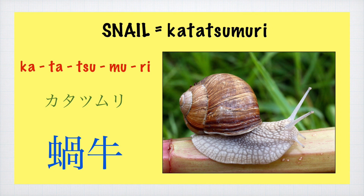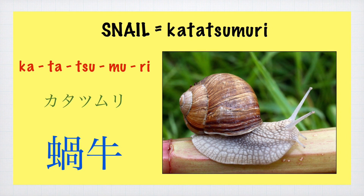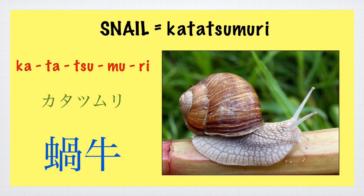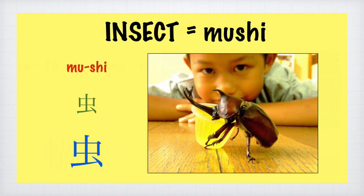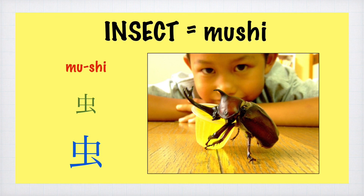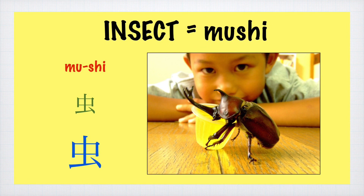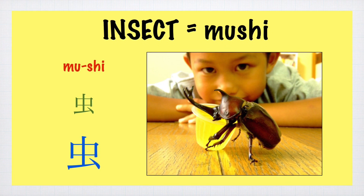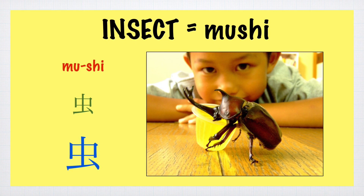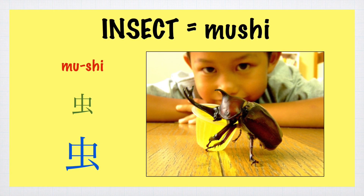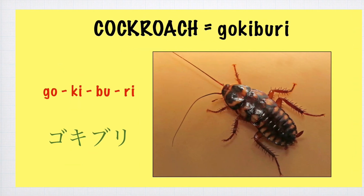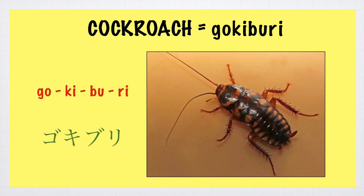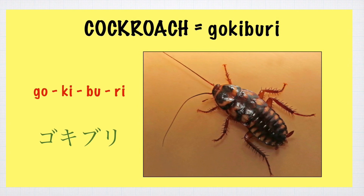Snail — Katatsumuri. Katatsumuri. Insect — Mushi. Mushi. Please note that Mushi refers to insects in general. Cockroach — Gokiburi. Gokiburi.